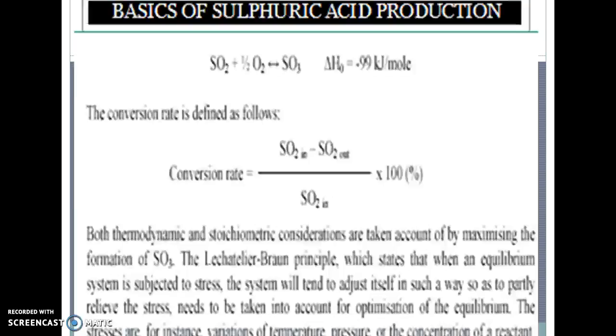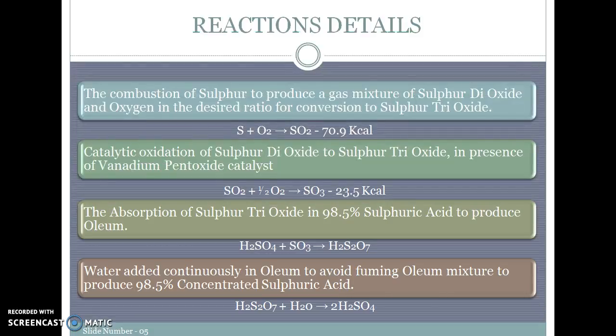This is a very important reaction: SO2 reacting with oxygen to give you SO3. Better the production of SO3, better would be sulfuric acid production. So better the conversion of SO2 to SO3, better would be final H2SO4. Using Le Chatelier's principle, you require more feed SO2 and oxygen to make SO3. Also, it's an exothermic reaction, so temperature required to be lower.